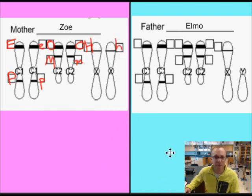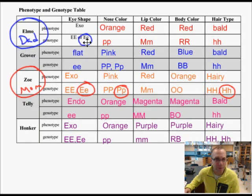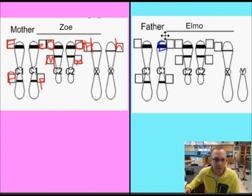Now let's move on to Elmo. Same thing. On top of chromosome number 1, we have eye shape. So I'm going to go and check Elmo's eye shape. Good, we chose the heterozygous one, it's the big E, little e. I'm going to place one of the letters in this box, one of the letters in this box, and let's move on to the bottom of chromosome number 2.